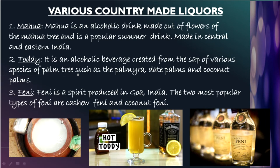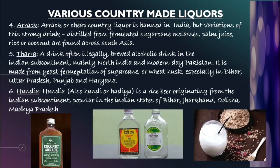On screen you can see images of Mahua, Toddy, and Feni. Next, Arak is distilled from different substances like cocoa palm, rice, sugar, jaggery, etc., and it has an alcoholic strength ranging from 40% to 50%. Now Thara is a drink made from sugarcane juice or sugarcane pulp, prepared by fermenting it in ceramic containers. It is brewed mostly in the northern parts of India and some parts of Pakistan — in India it is very popular in Bihar, Uttar Pradesh, Punjab, and Haryana.